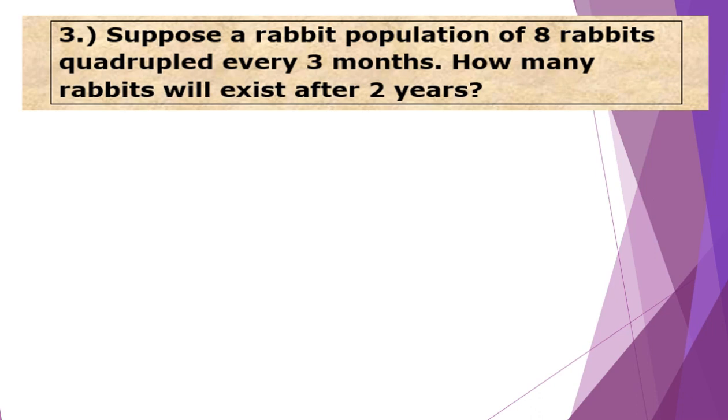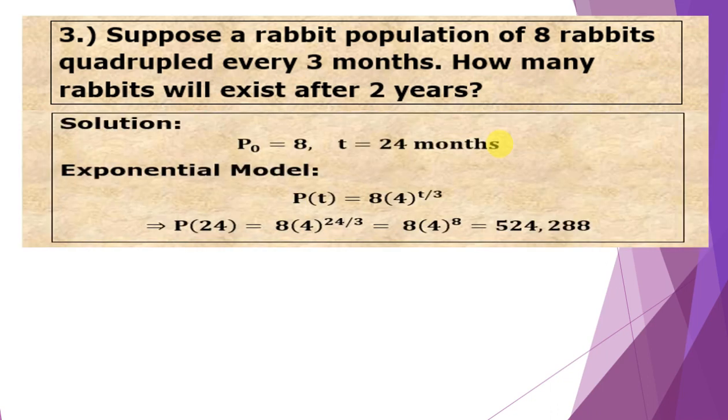Number three: Suppose a rabbit population of eight rabbits quadrupled every three months. How many rabbits will exist after two years? P₀, or the initial amount of rabbit population, is eight rabbits. Then it quadrupled every three months, meaning quadrupled four times every three months.